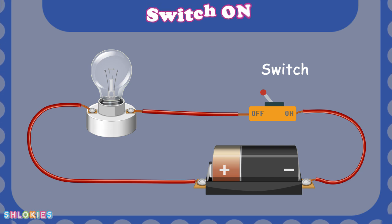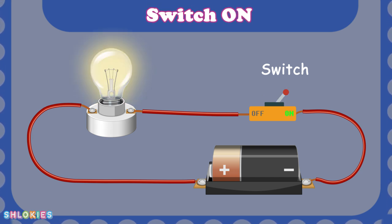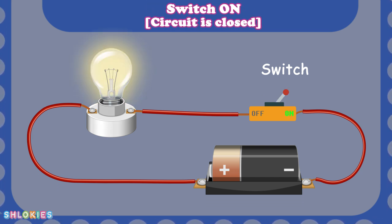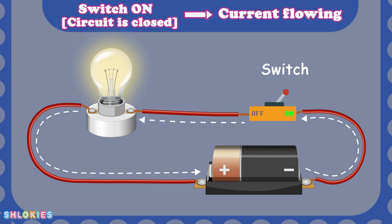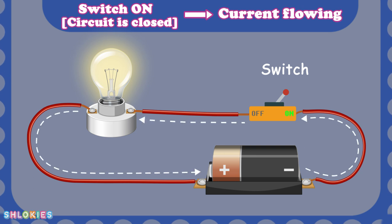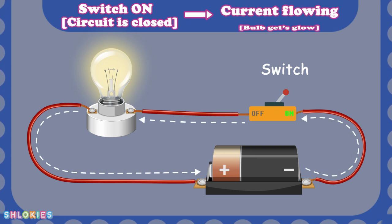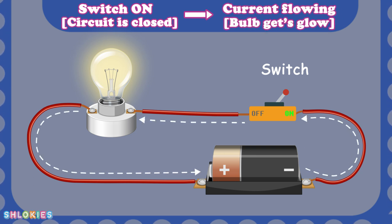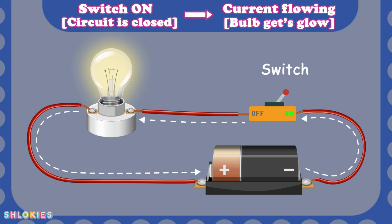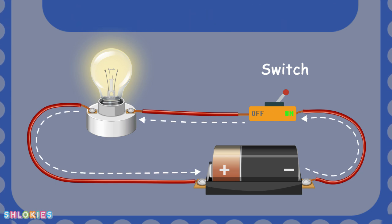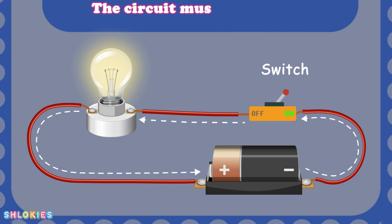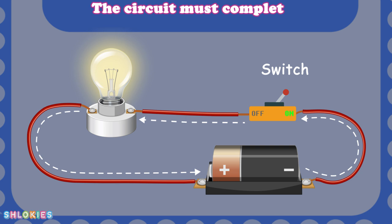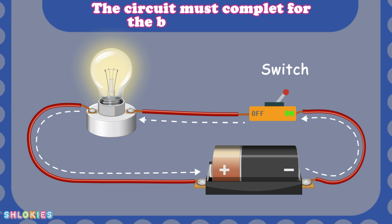When the switch is on, the circuit is closed. Electric current is flowing in the wire and bulb gets glow. The circuit must complete for the bulb to light up.